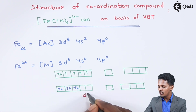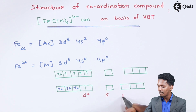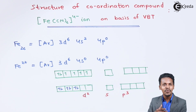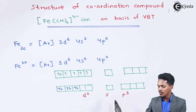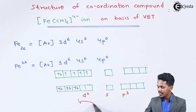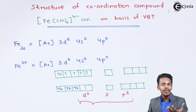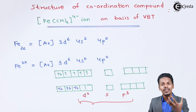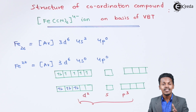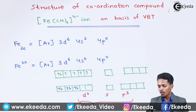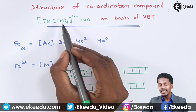Fe2+ gives us d2, s, and p3, so Fe2+ undergoes hybridization that is d2sp3, which we can also call sp3d2. This kind of hybridization gives the complex an octahedral geometry or structure.